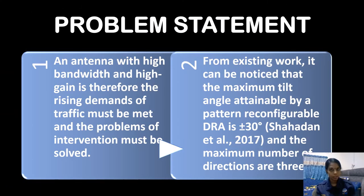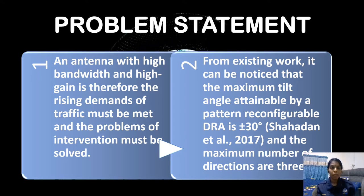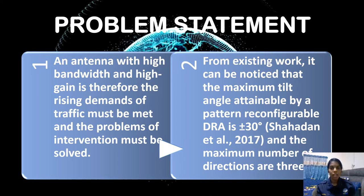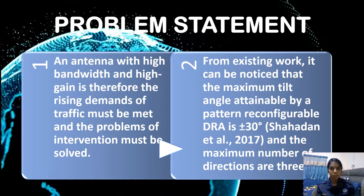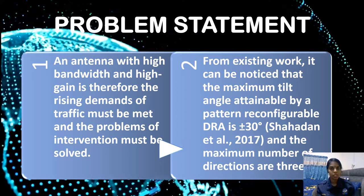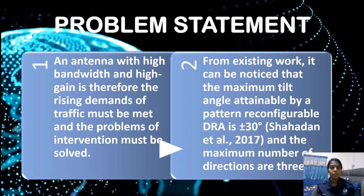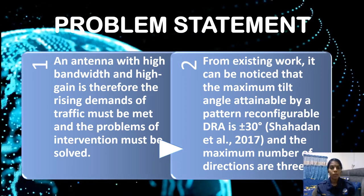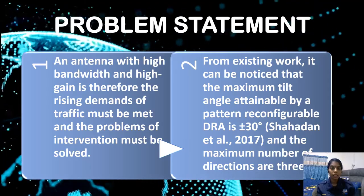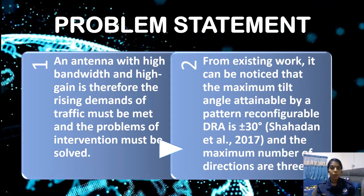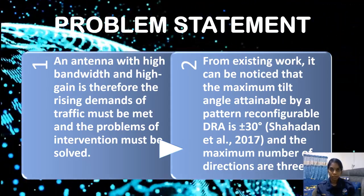First and foremost, let us begin with the project's problem statement. The first problem is the rising demand for an antenna with high bandwidth and high gain, which is required for upcoming generations. The second problem is that most general research papers on 5G antennas achieved a maximum tilt angle of only three directions, with an attainable angle of plus or minus 30 degrees only.